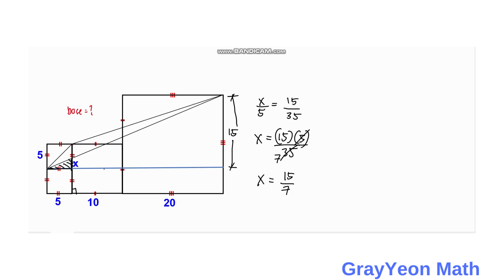The next step is we now find this base here, so that base would be 5 minus 15 over 7. I call that as b. So b equals 35 over 7 minus 15 over 7, which equals 20 over 7.